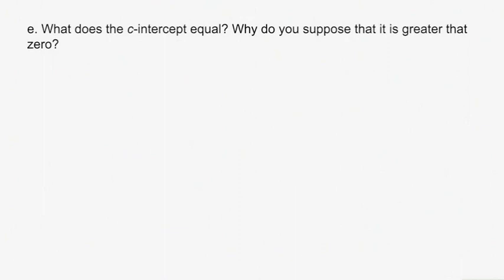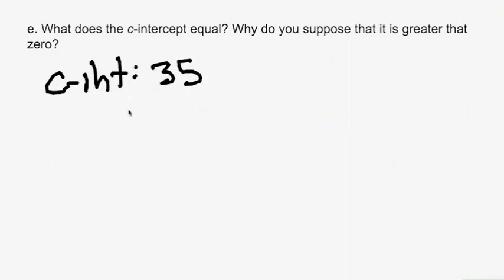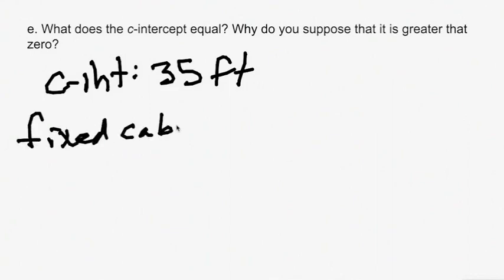Part E: what does the C-intercept equal and why is it greater than 0? Plug in 0 for S and you get a C-intercept of 35 feet. Even with no stories, you still need 35 feet of cable because there is a fixed cable length required regardless of stories — in order for there to be an elevator at all, this much cable is needed before you can even account for the number of stories.